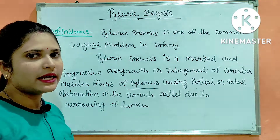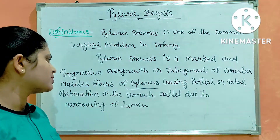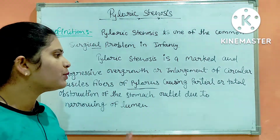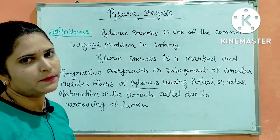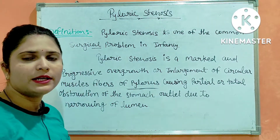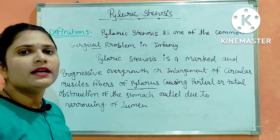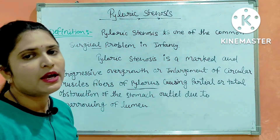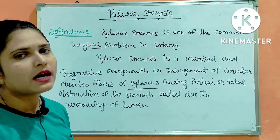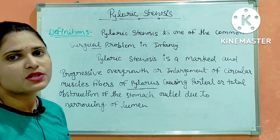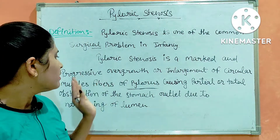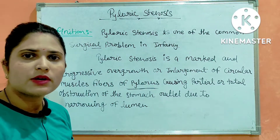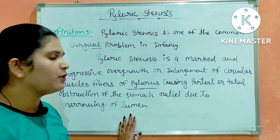The pyloric muscles enlarge, causing partial or total obstruction of the stomach outlet due to narrowing of the lumen. This is called pyloric stenosis — a common surgical problem in infants where the muscle fibers in the pylorus undergo overgrowth, leading to total or partial obstruction of the stomach.